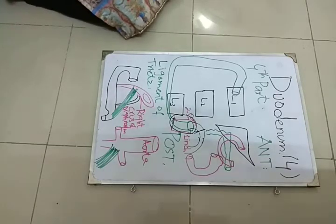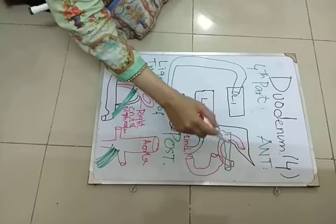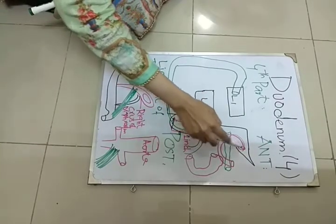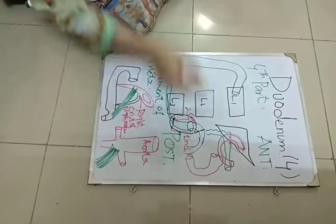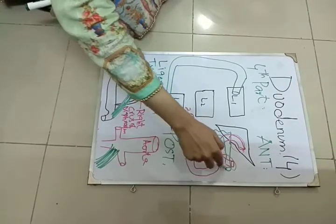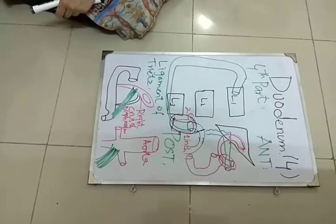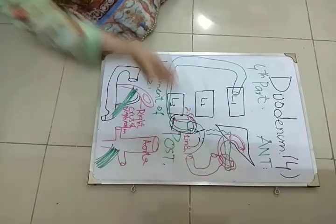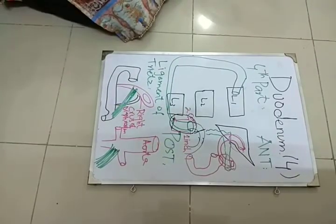Anteriorly, in this diagram, you should not be confused with these structures, as this portion is the third part. And only this is showing the fourth part of the duodenum. So the fourth part of the duodenum, anteriorly, has transverse colon, also the root of mesentery.